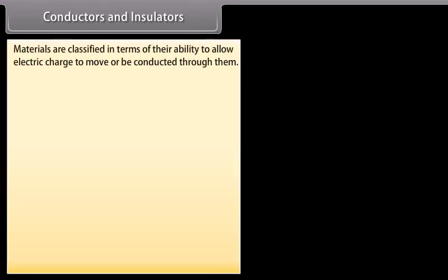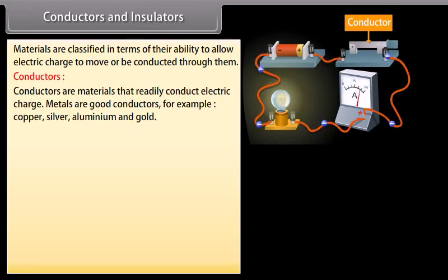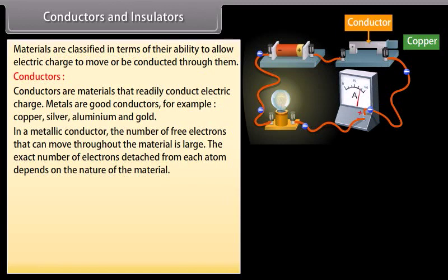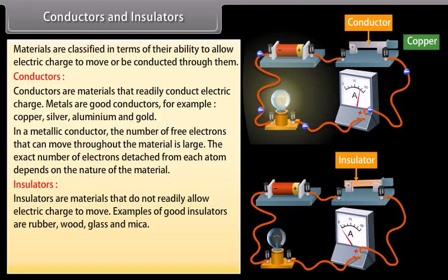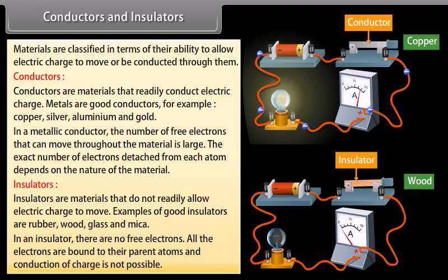Conductors and insulators: materials are classified in terms of their ability to allow electric charge to move or be conducted through them. Conductors are materials that readily conduct electric charge. Metals are good conductors — for example, copper, silver, aluminum, and gold. In a metallic conductor, the number of free electrons that can move throughout the material is large. Insulators are materials that do not readily allow electric charge to move. Examples of good insulators are rubber, wood, glass, and mica. In an insulator, there are no free electrons; all electrons are bound to their parent atoms and conduction of charge is not possible.